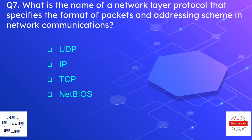Question number seven is: what is the name of a network layer protocol that specifies the format of packets and addressing scheme in network communication? The options are UDP, IP, TCP, and NetBIOS — and the correct answer is IP. The IP protocol works at layer three or the network layer, and an example of IP addressing is 192.168.1.10.